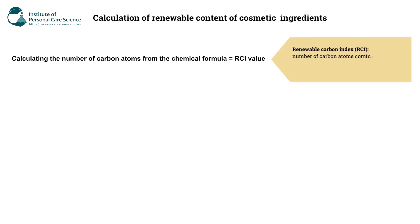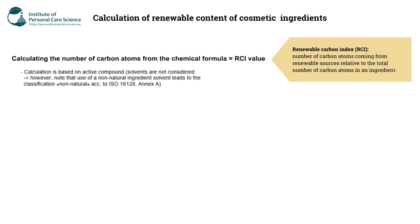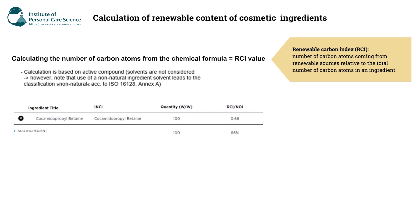The RCI is the number of carbon atoms coming from renewable sources relative to the total number of carbon atoms in an ingredient. You also need to make sure this calculation is based on the active compound of a blended material — in this case, cocamidopropyl betaine — and this has an RCI value of 0.66.